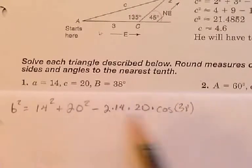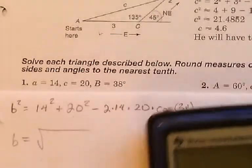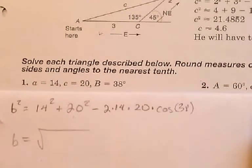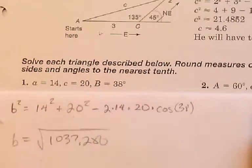If we multiply — if we add these things together, multiply them all out, then take the square root — B is going to equal the square root of whatever we get when we multiply all those things out. So let's do it: 14 squared plus 20 squared minus 2 times 14 times 20 times the cosine of 38 degrees. I get 1037.286. Take the square root of that number — that's 32.2.